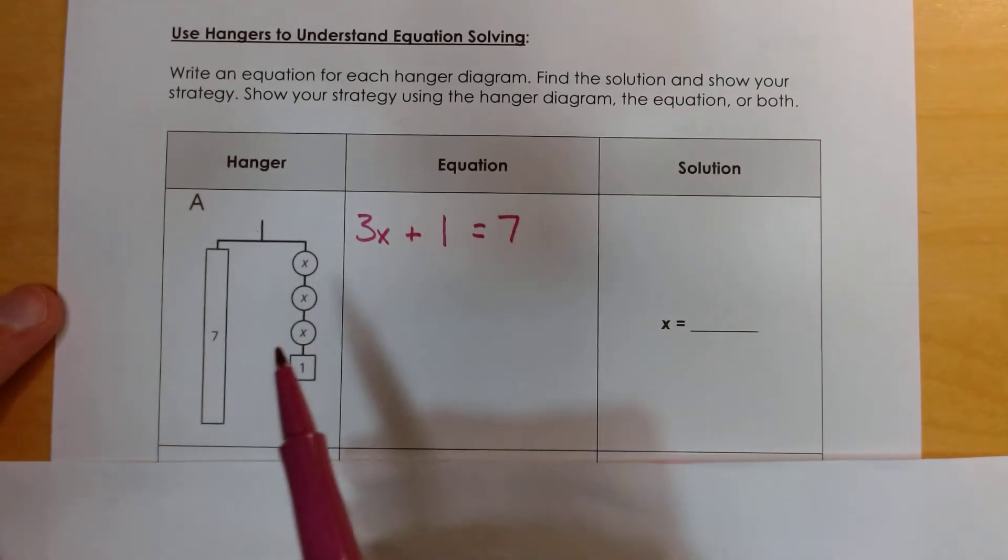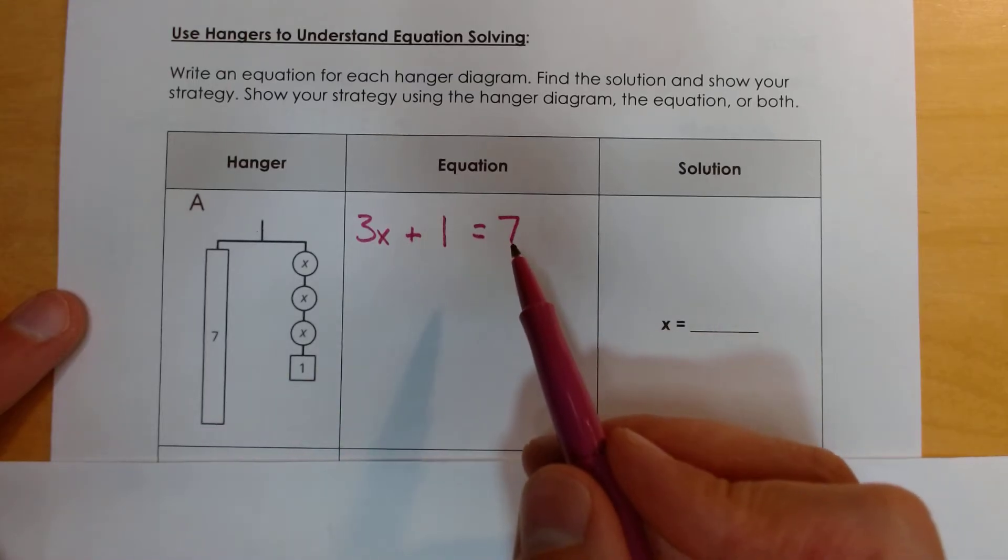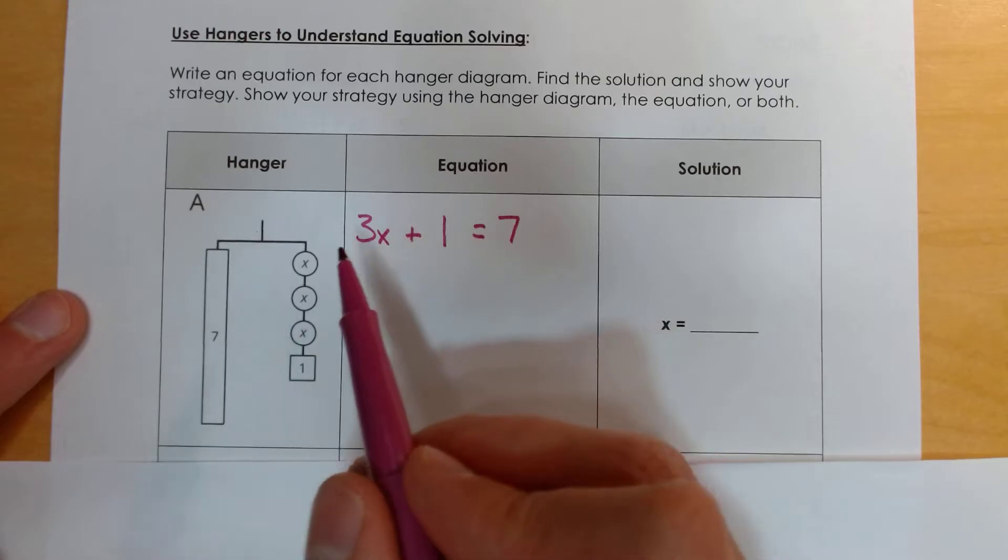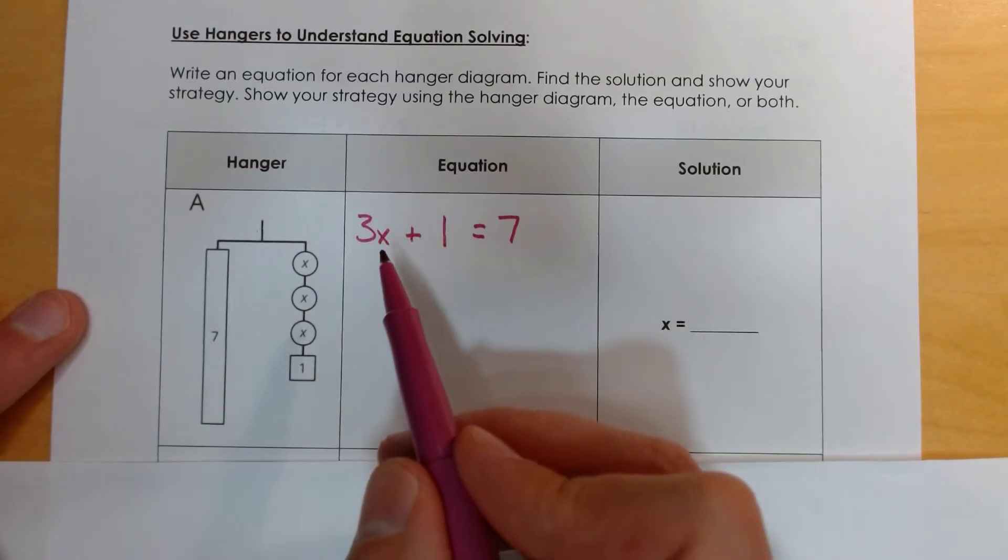So I want to pause for a second. Notice how 7 was on the left side of our diagram, and I have it on the right side of my equation. I like to place my variables on the left side, so you are allowed to flip-flop these two sides if you want to. Now let's solve for x.